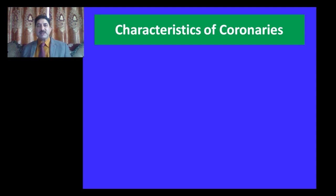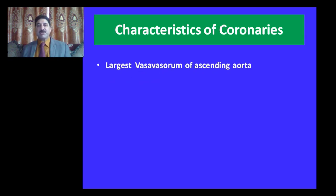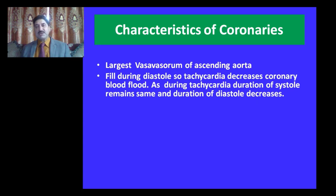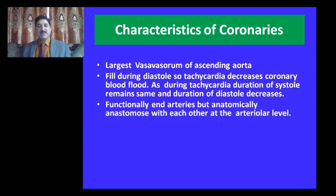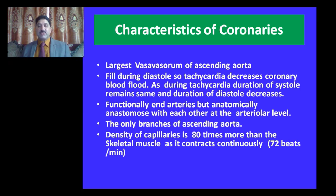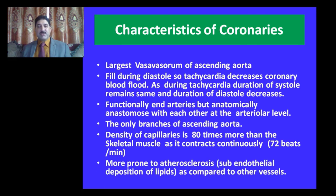What are the characteristics of coronary arteries and how do they differ from other arteries of the body? Coronary arteries are basically vasa vasorum — vasa vasorum are vessels that supply a blood vessel. They are the largest vasa vasorum of the ascending aorta. All arteries of the body fill during systole, whereas the coronary arteries get filled during diastole, so the heart receives its blood supply when it is relaxed. Coronary arteries are classified functionally as end arteries but anatomically anastomose with each other at the arteriolar level. They are the only branches of the ascending aorta. The density of capillaries of the coronary artery is 80 times more than skeletal muscle, as the heart contracts continuously at the rate of 70 beats per minute. Coronary arteries are more prone to atherosclerosis compared to other arteries.